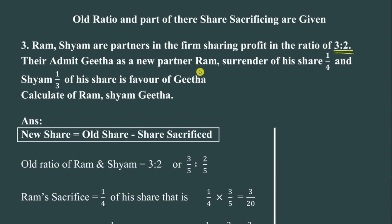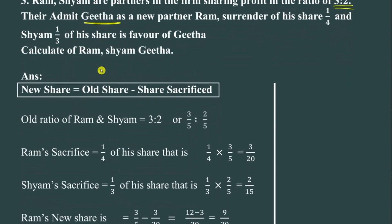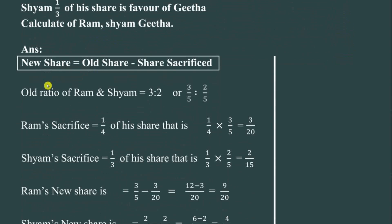Gita is admitted as a new partner. The existing partners surrender 1/4 of their share each. The firm is sharing profit and loss in the ratio of 3:2. Gita's new share is 1/3. This share is not the same, which is an important point. So how do we solve this problem? We calculate the New Profit Sharing Ratio using the formula.